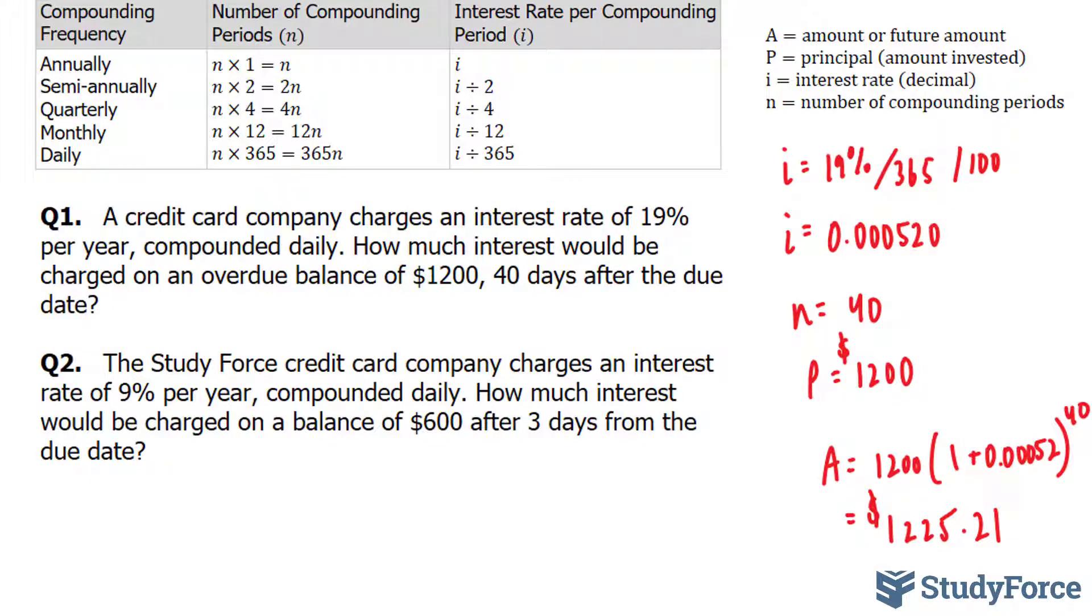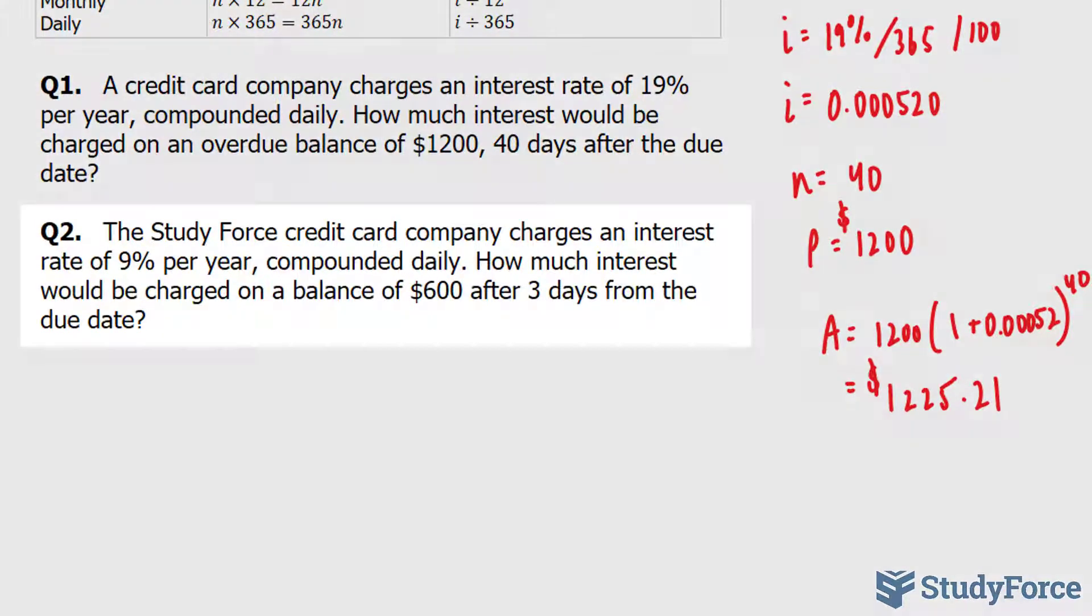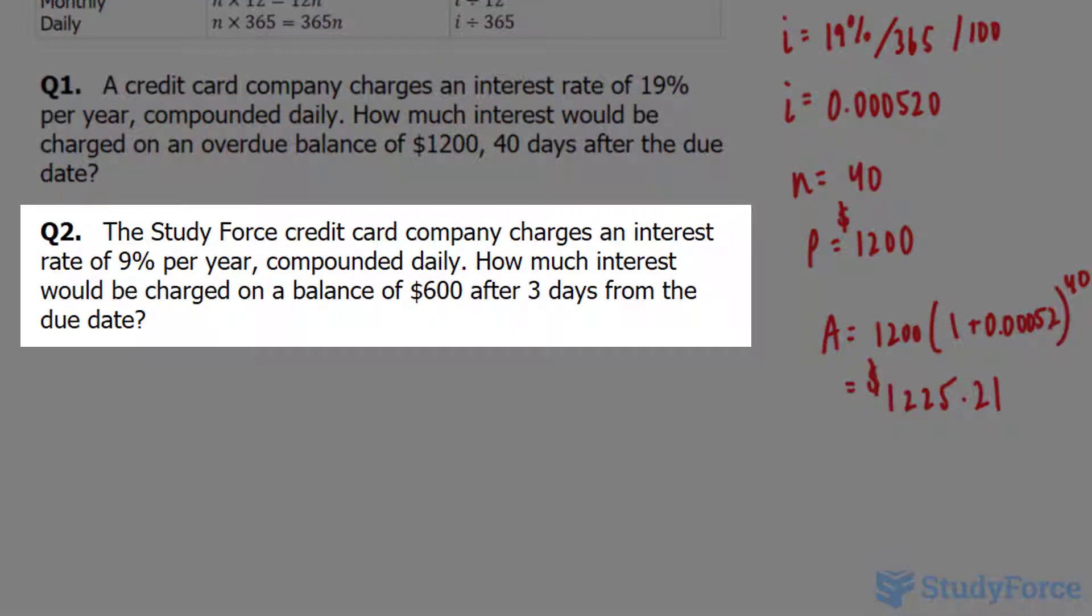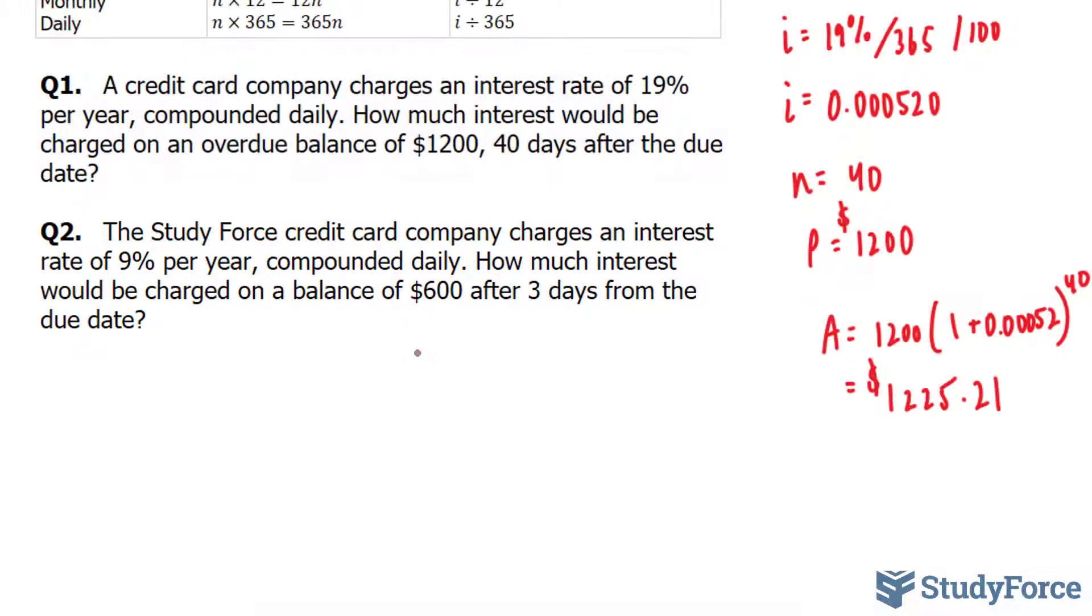Let's move on to question 2. Now that we have experience, we can do this quickly. The StudyForce credit card company charges an interest rate of 9% per year compounded daily. So our i value is 9% divided by 365 divided by 100.